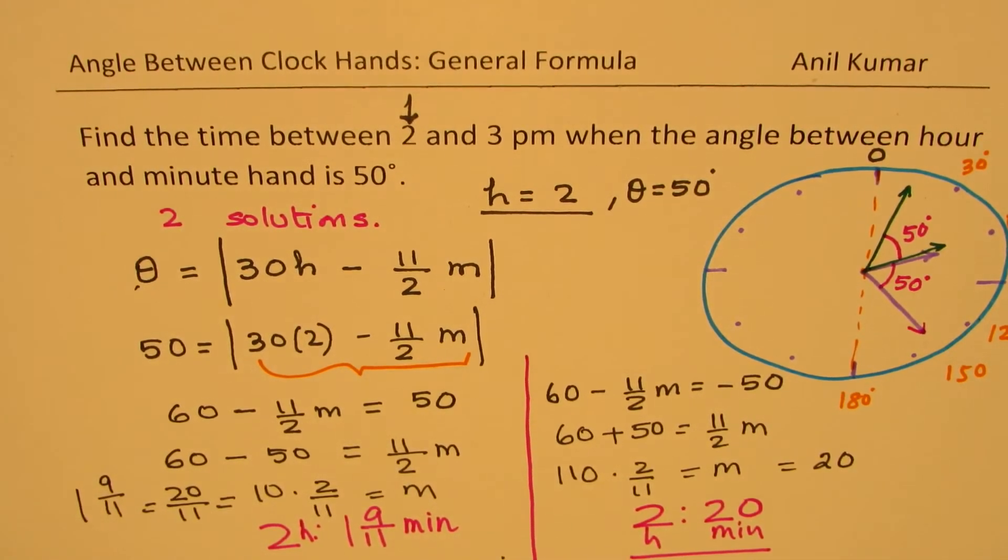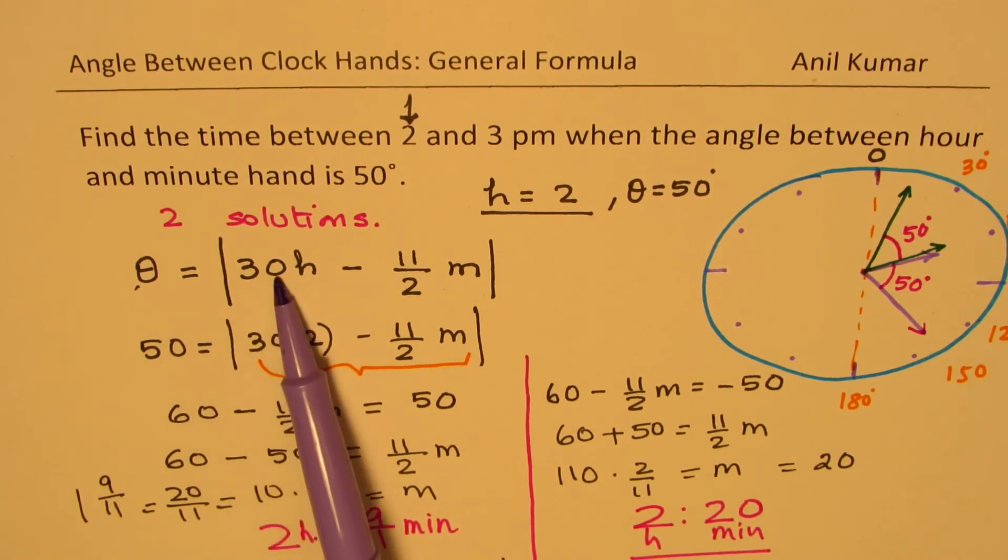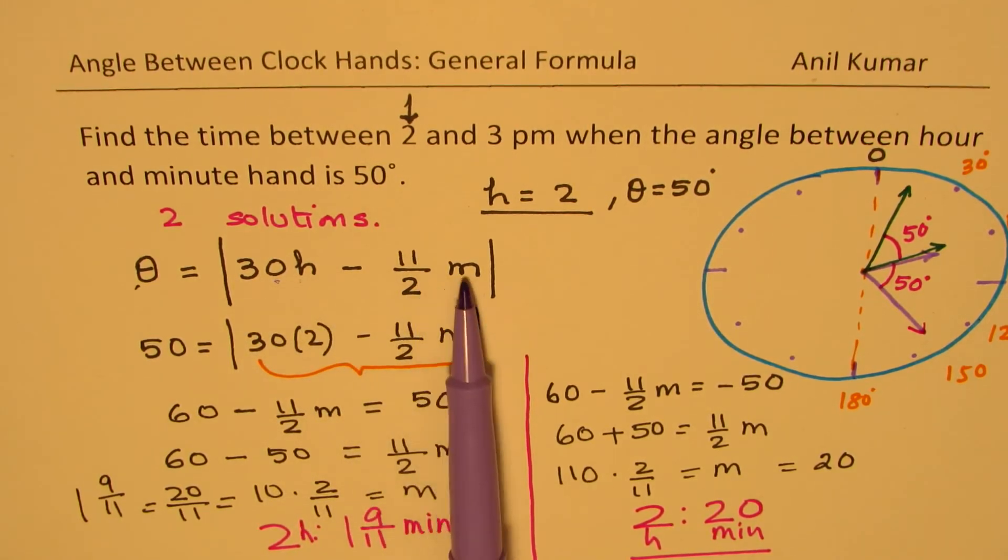So that is how you could actually solve this question. So that should be clear and straightforward. Now, to look into this, I'll provide you with a link for the derivation of this formula, how do we get this formula as the angle theta being equal to 30 times hours minus 11 by 2 times minutes. Perfect. But I hope that helps you to understand that the idea here is to find two different solutions, right? Since the minutes could be before hours or after hours, and then solve it.